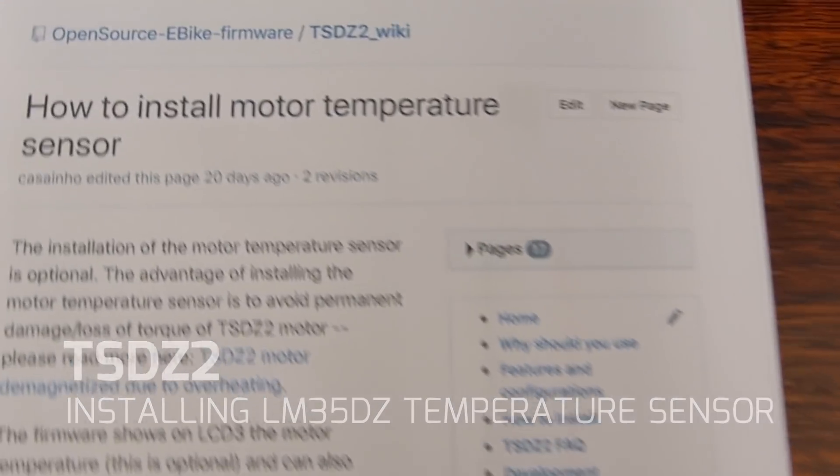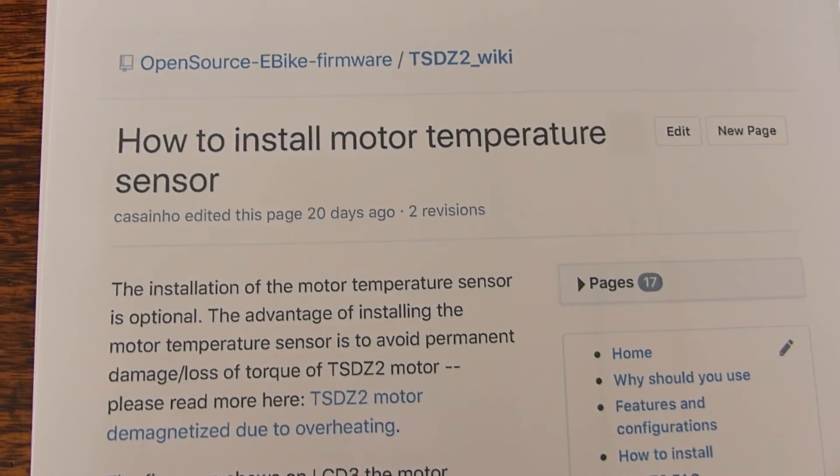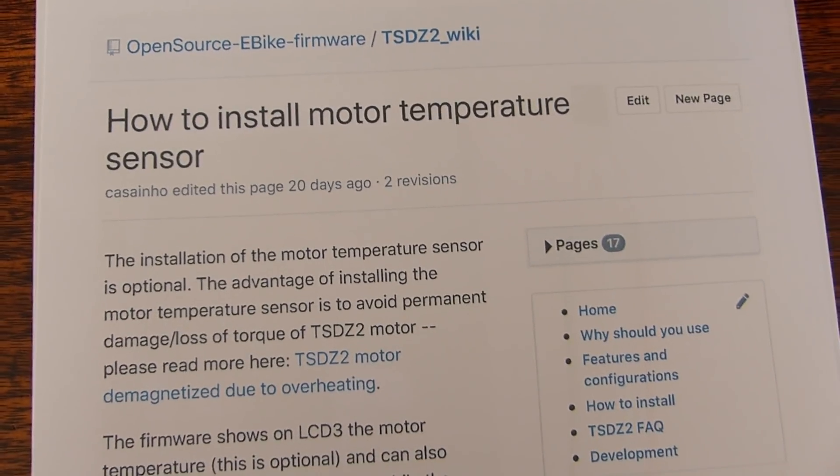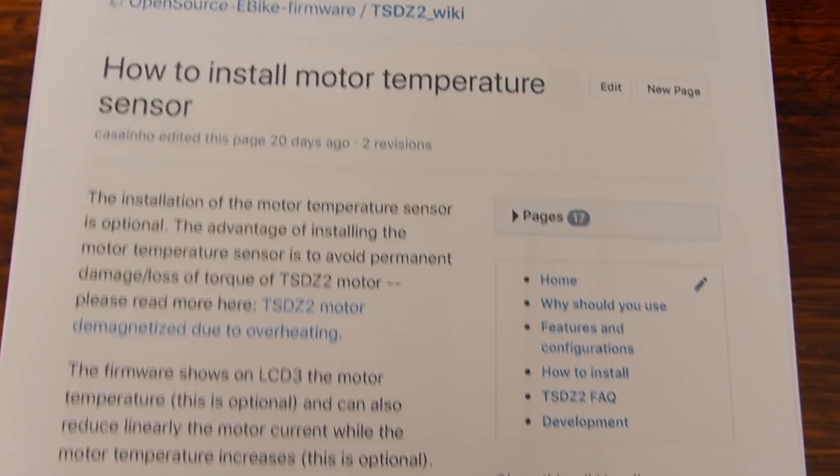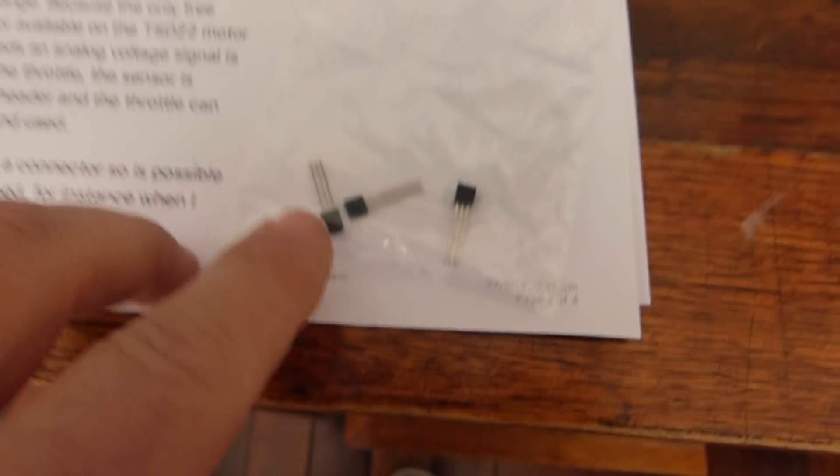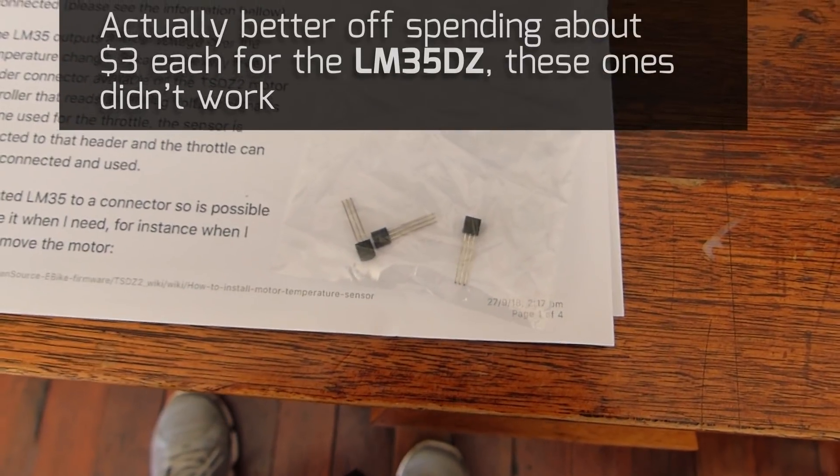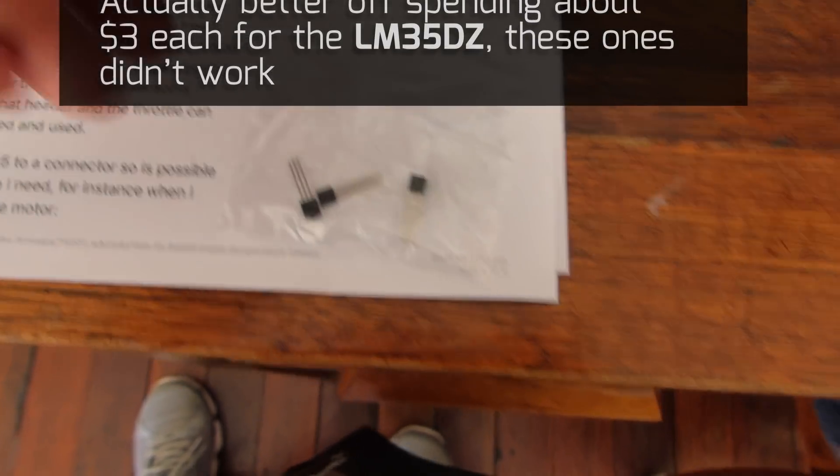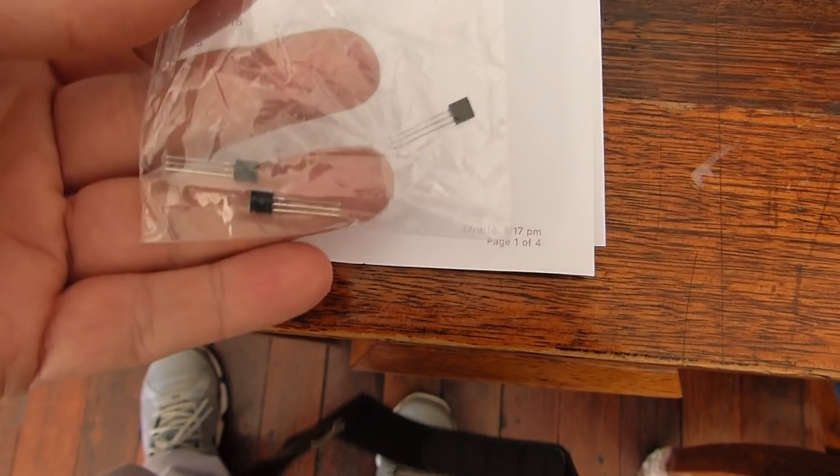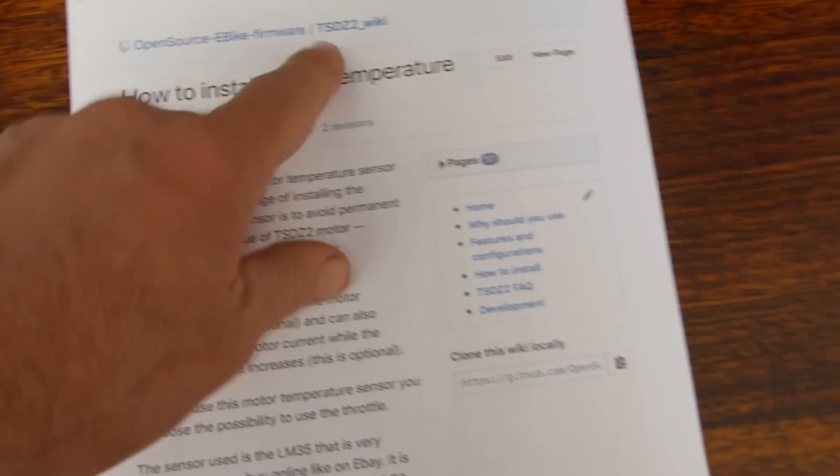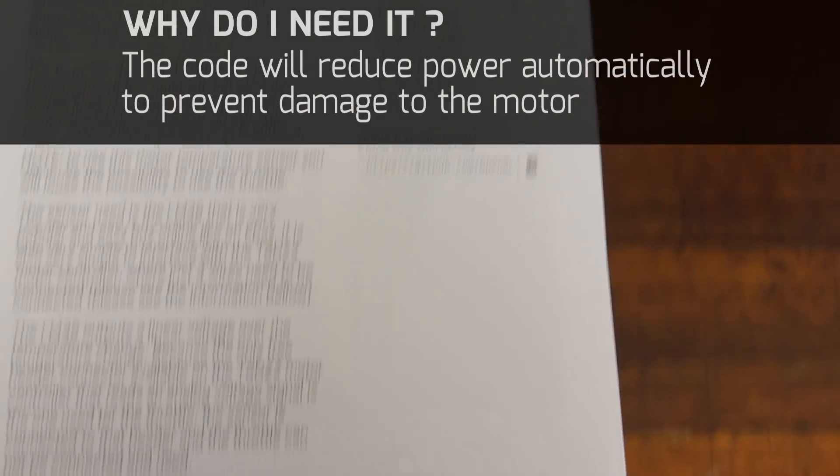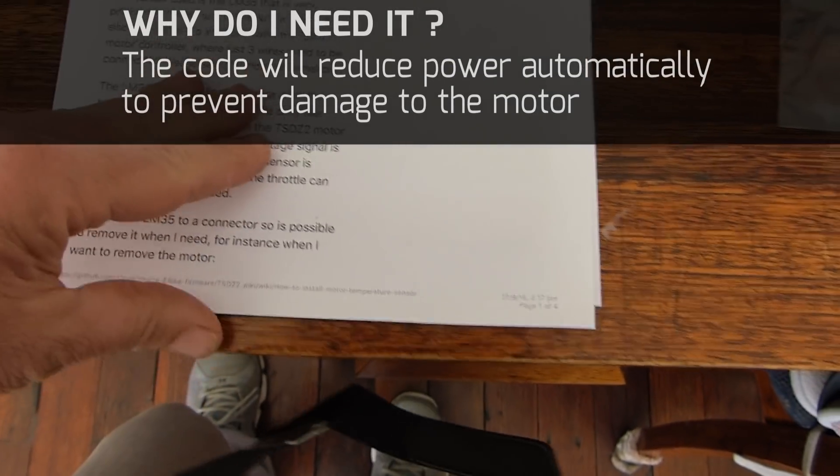Okay guys, in this video I will be taking you through how to install the motor temperature sensor on the open source firmware. Now you will need to buy the LM35 sensor. I think I spent about a dollar each on eBay, so have a look around. They're actually quite tiny, so make yourselves familiar with the wiki and have a bit of a read about all the steps that are required.